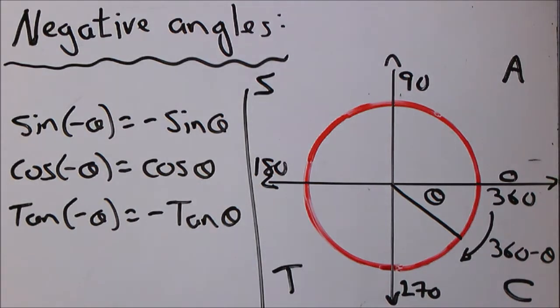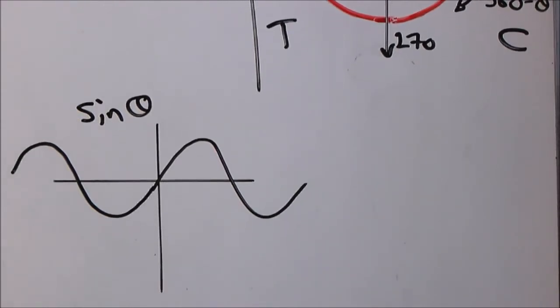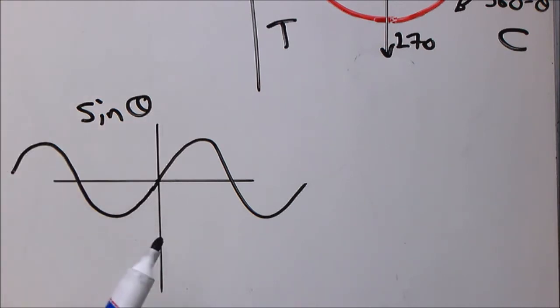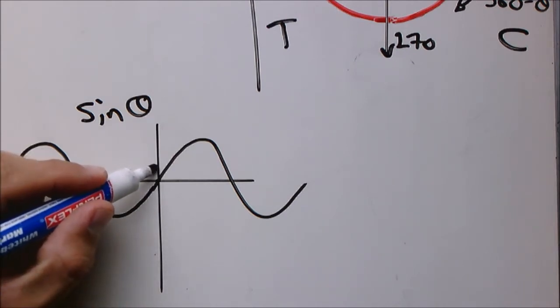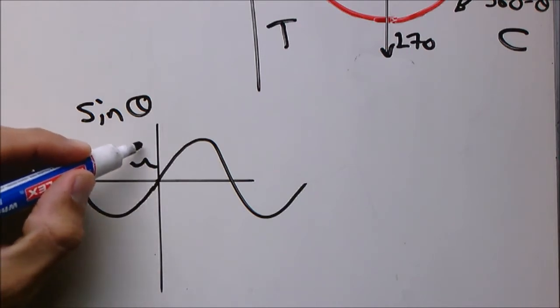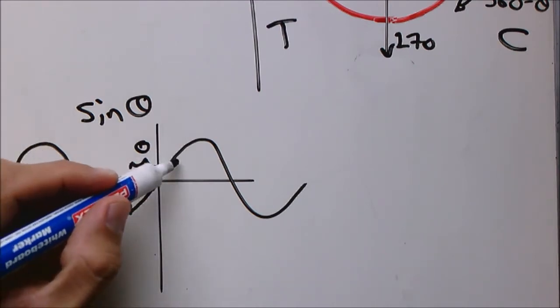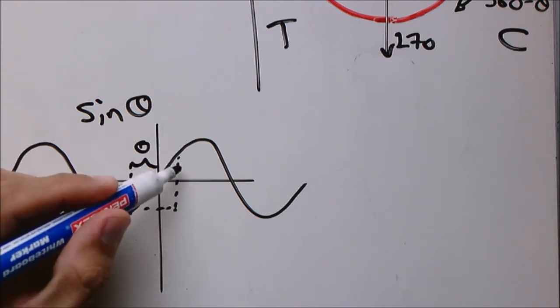The second way to remember this is by looking at the sin graph, cos graph and tan graph. So let's first look at the sin graph. And you will see there that sin theta is asymmetrical. Let's assume this distance is sin theta. That means this will be negative theta.